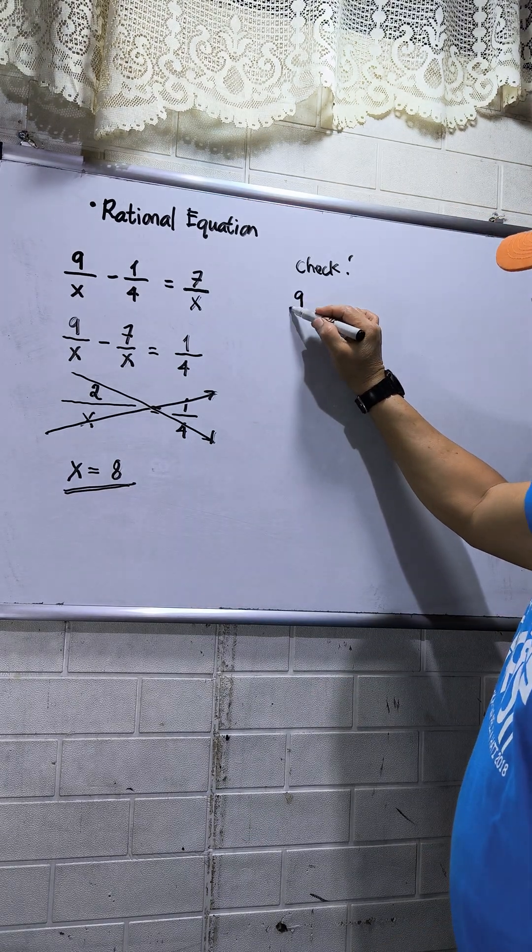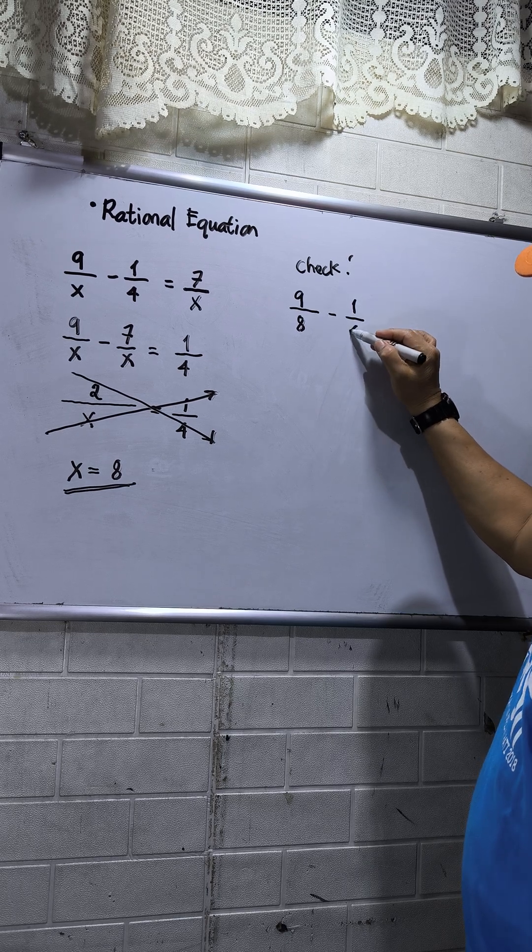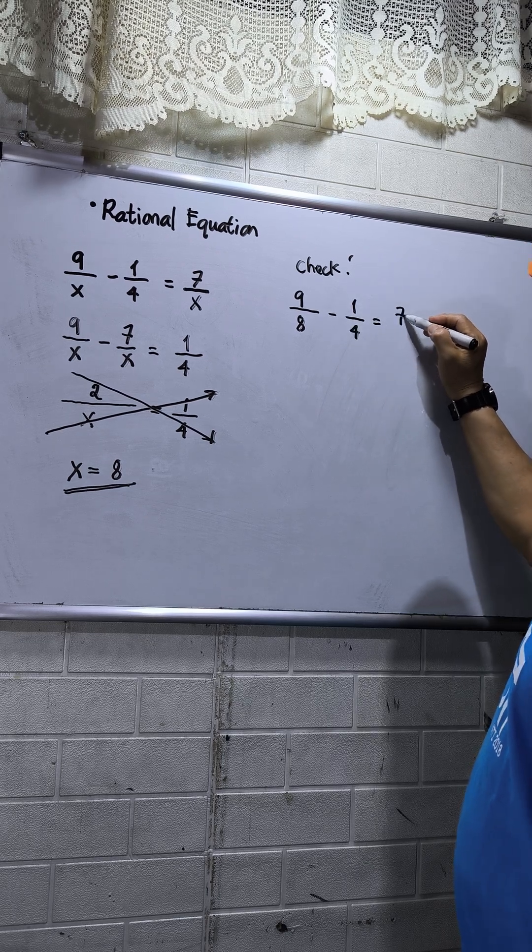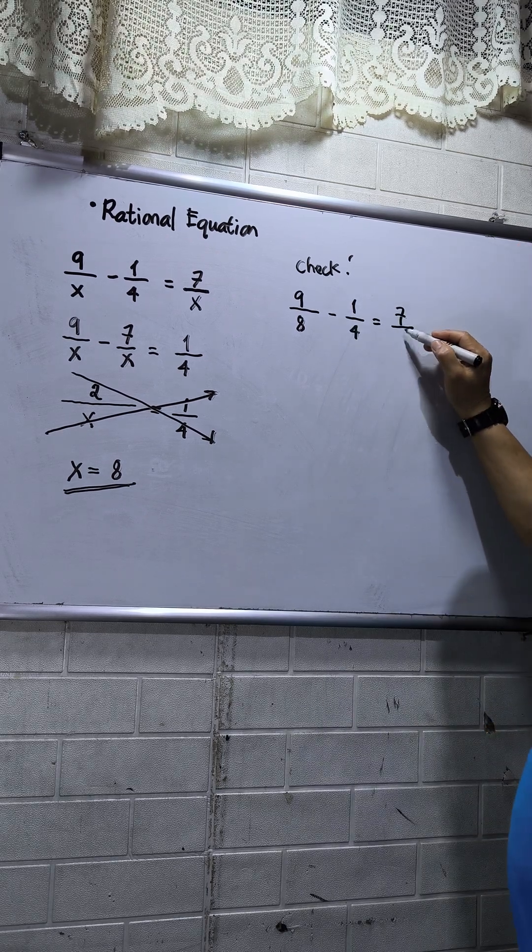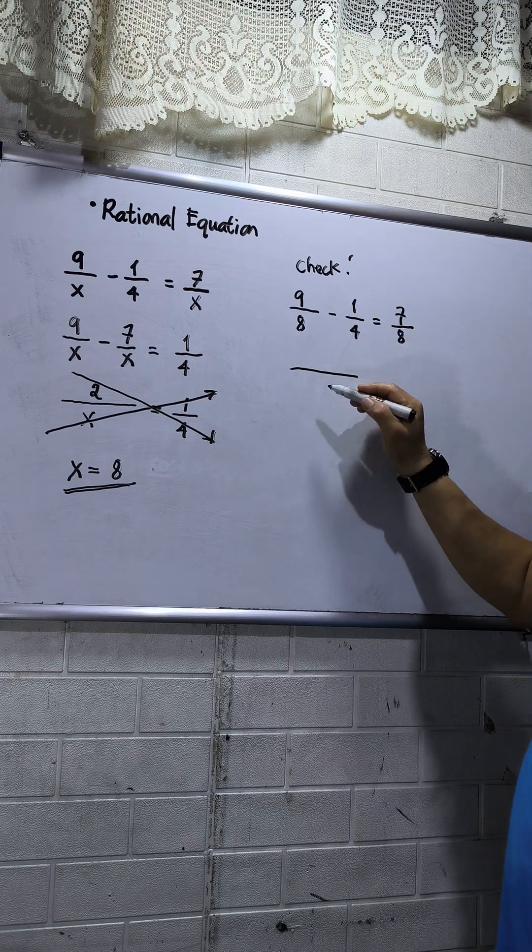So 9 over 8, then minus 1 over 4 equals 7 over 8. Okay, LCD at the left side is 8.